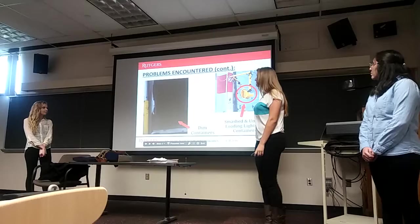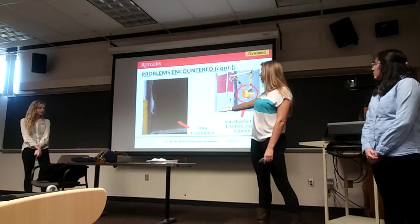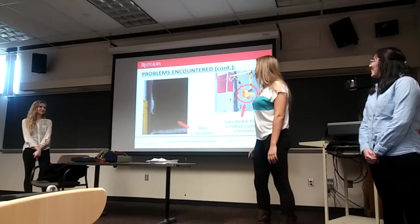More problems encountered. On the right, there are smashed and unused loading lights. These lights are on every dock in the warehouse, but none of them had light bulbs in them and most were damaged. As you can see on the left, this causes dim containers — this is a picture from the loading dock of the inside of a container ready to be filled. You can't see anything in there, which caused a lot of trouble for the forklift drivers.